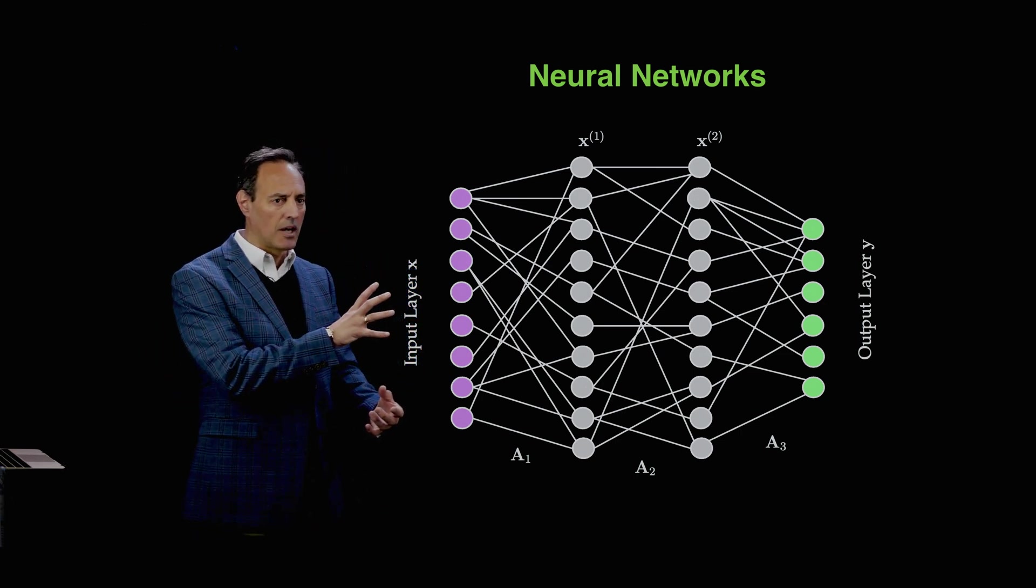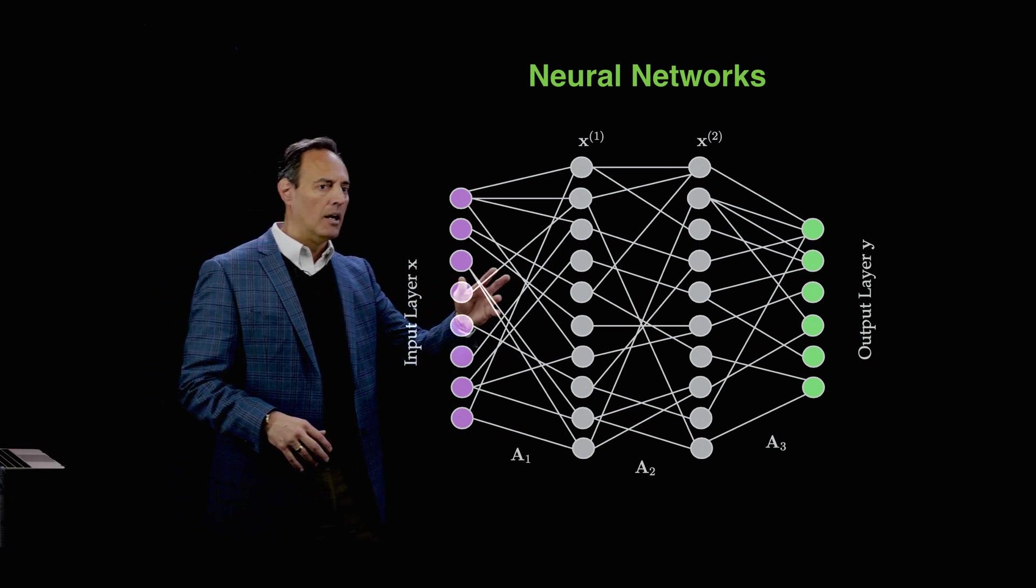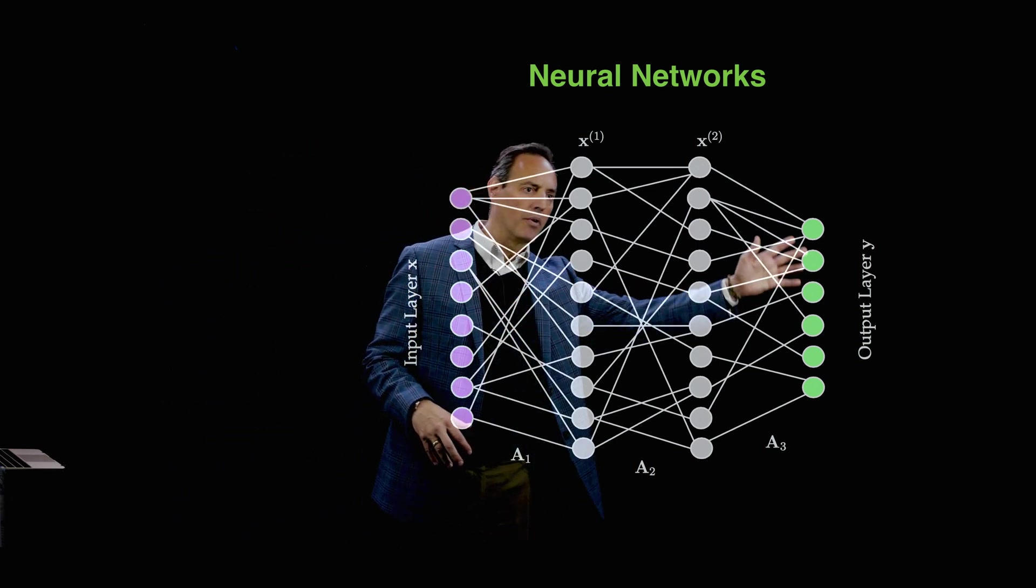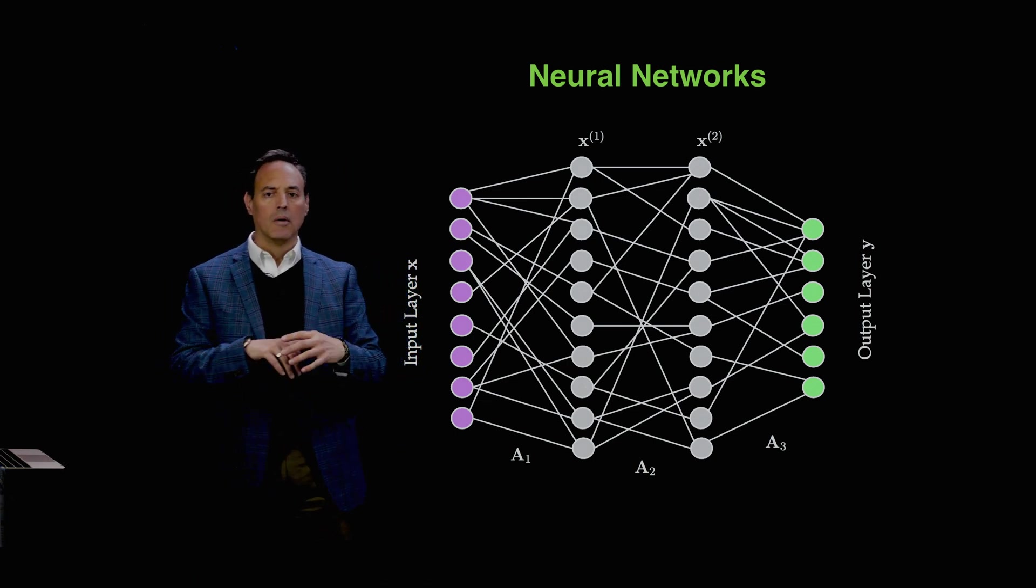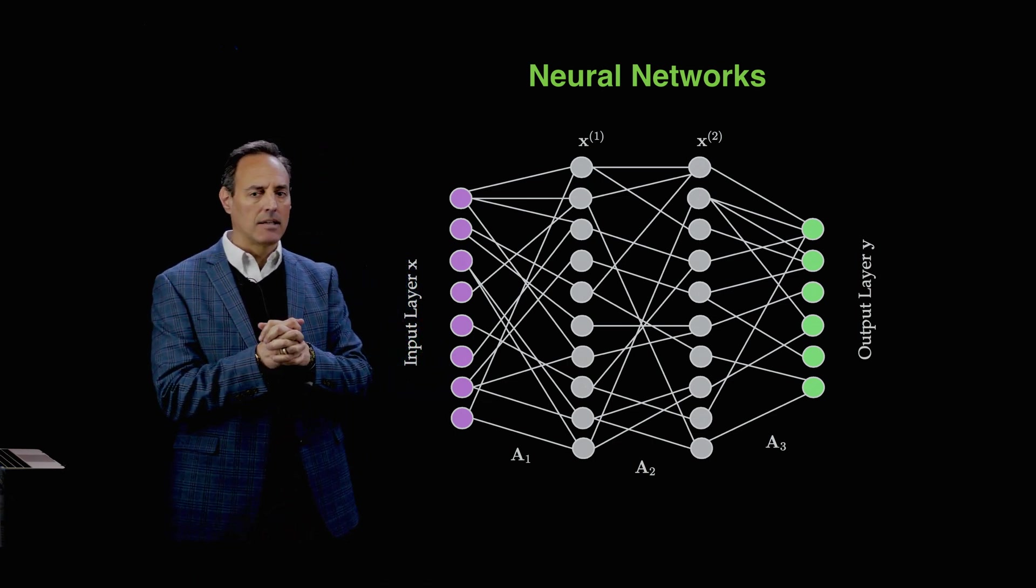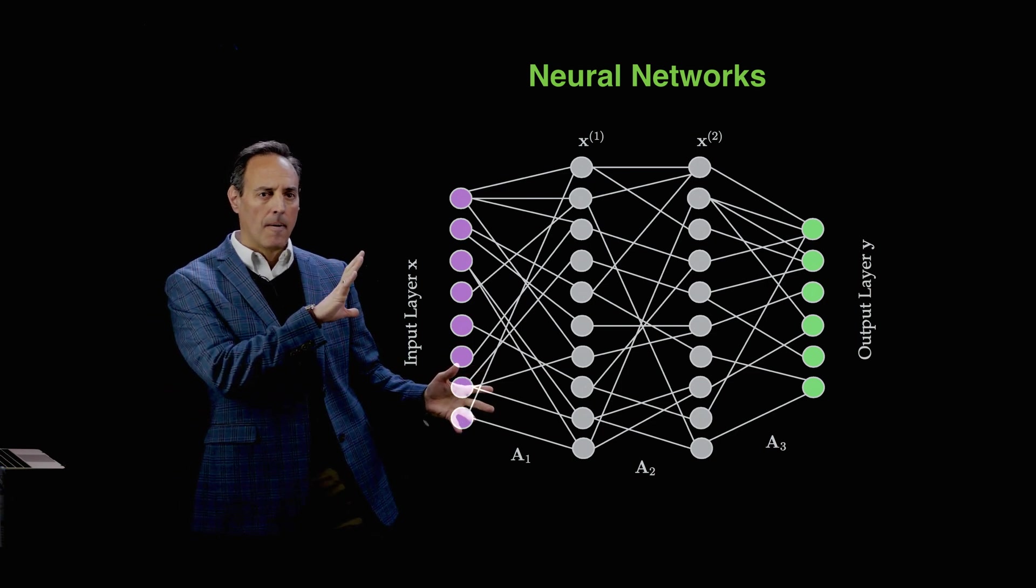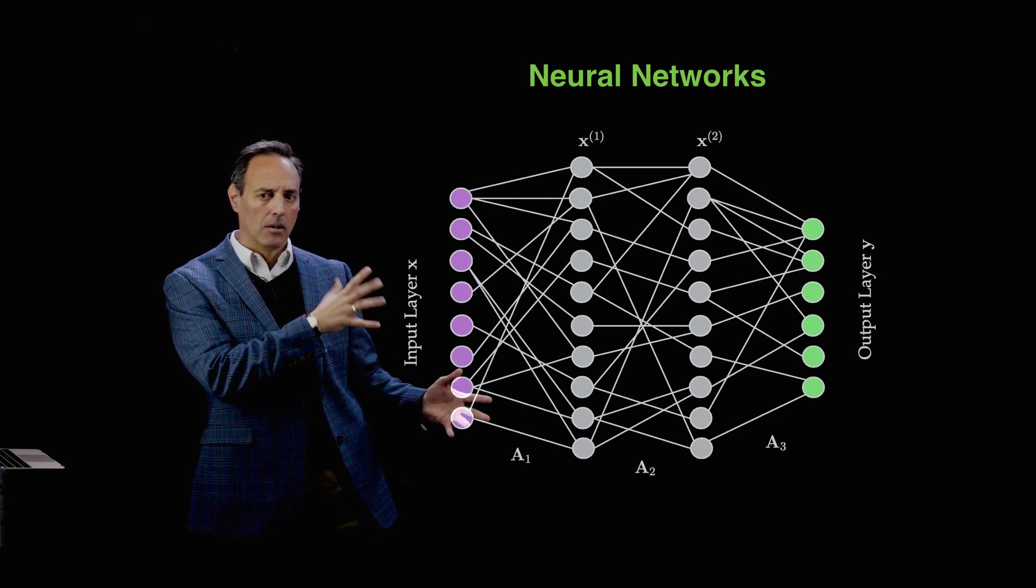We often draw neural nets in this kind of architecture where we have an input layer, lots of hidden layers, and an output layer, with the idea of either doing some kind of reconstruction, perhaps a labeling task or a classification task. This is a generic picture of what a neural net might look like.